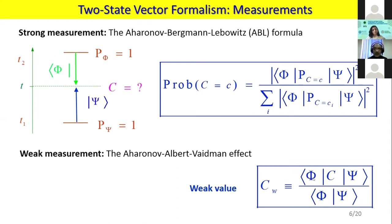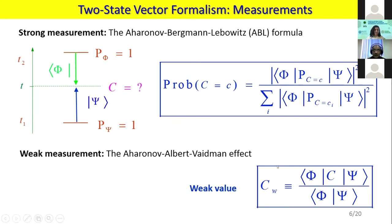There is another measurement: weak measurement. For weak measurement, we place our meter where we want to make some measurement. This meter is not strongly affected by this measurement — the meter gets some information but does not disturb the system. The weak value expression gives us the measurement of the weak value.